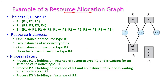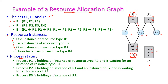Let us see one example of a resource allocation graph. We have three processes: P1, P2, and P3, and four resources: R1, R2, R3, and R4. R1 has one instance, R2 has two instances, R3 has one instance, and R4 has three instances. P1 holds one instance of R2 and is waiting for R1. P2 holds one instance of R2 and one instance of R1, and is waiting for R3. P3 holds one instance of R3.